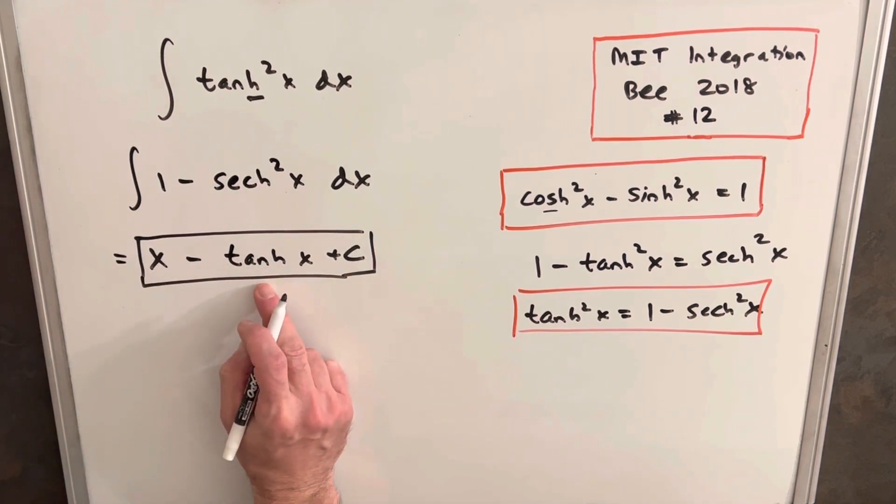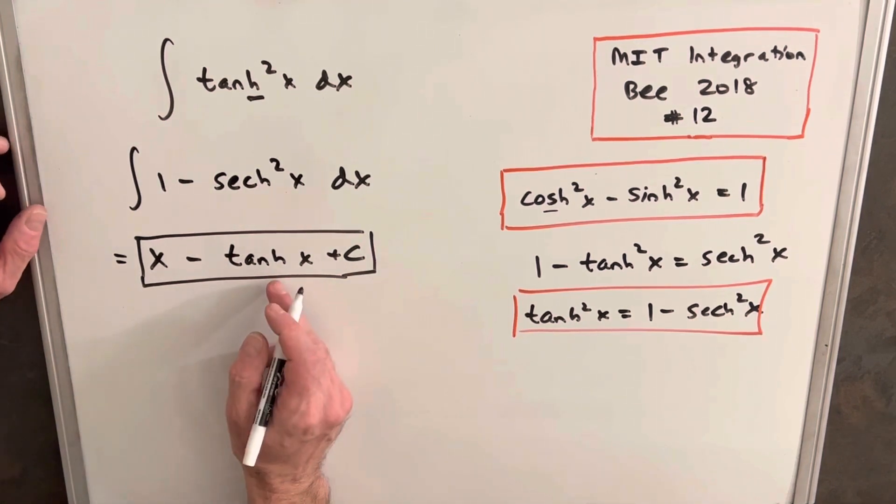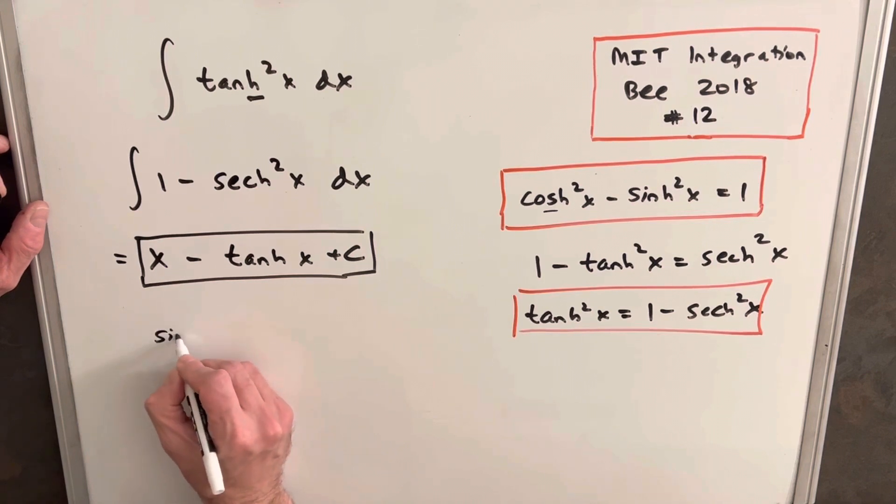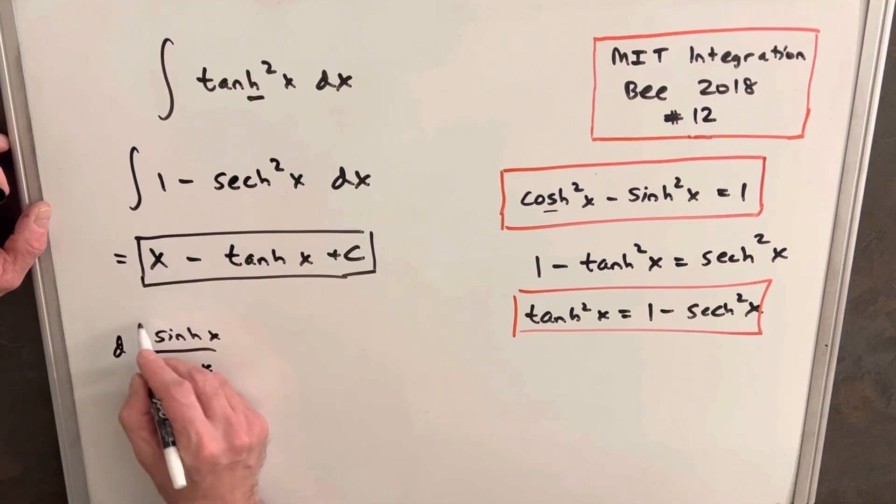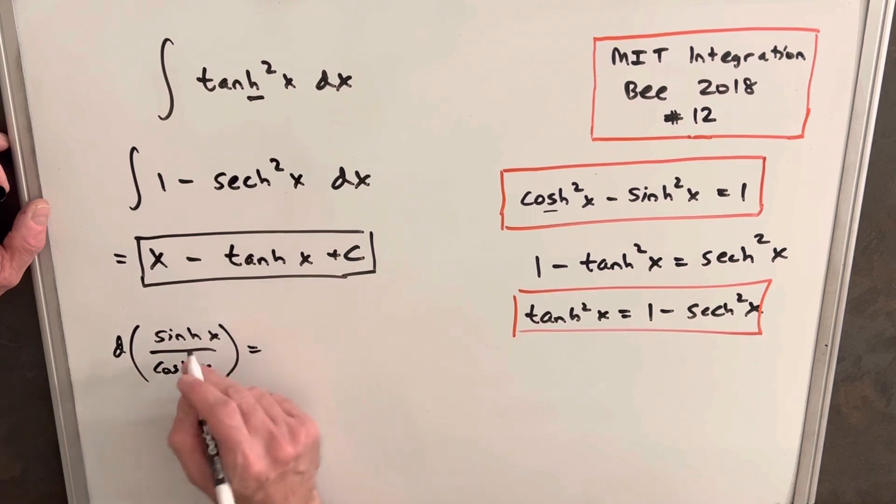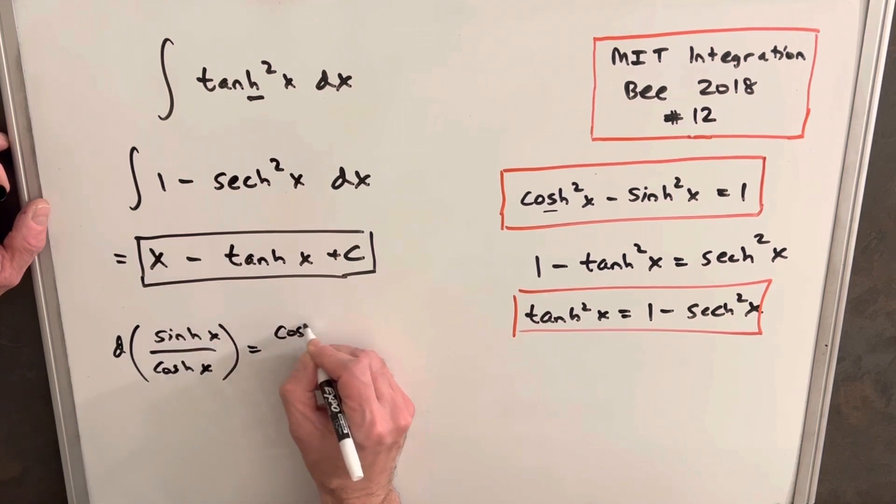So the derivative of hyperbolic tangent, we can write hyperbolic tangent as hyperbolic sine over hyperbolic cosine. And then we can differentiate this just using the quotient rule. So the derivative of hyperbolic sine is going to be cosh.